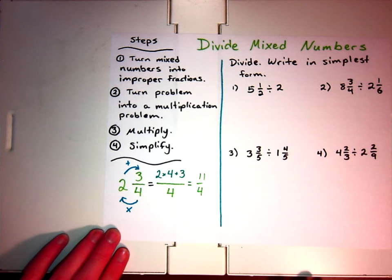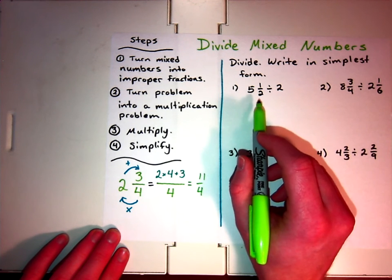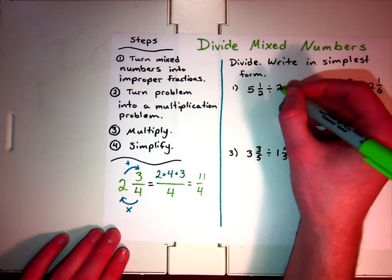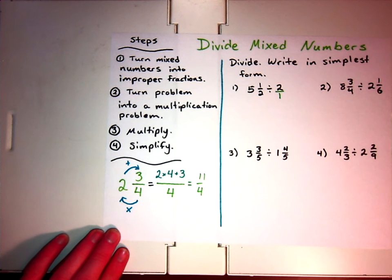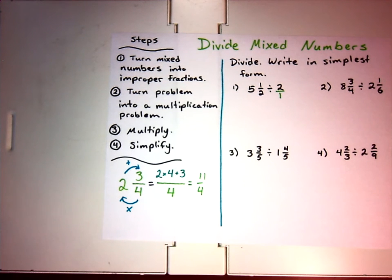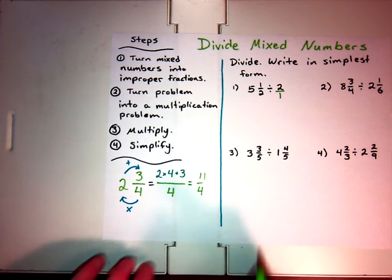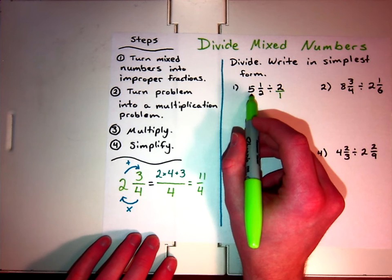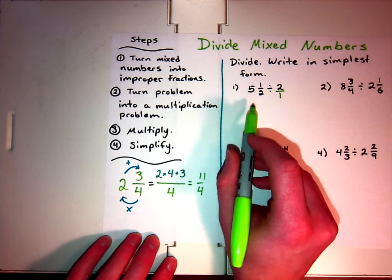So going into these examples, I have a mixed number divided by a whole number. Well, remember, a whole number could just be simply written as 2 over 1, right? The number over the number 1, because 2 divided by 1 is equal to 2. So that number has not changed. We just turned it into a fraction, so we could use the rules we've been learning. Well, we need to do step one. We need to turn this mixed number into an improper fraction.